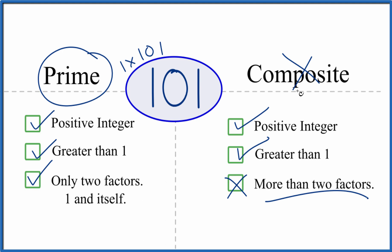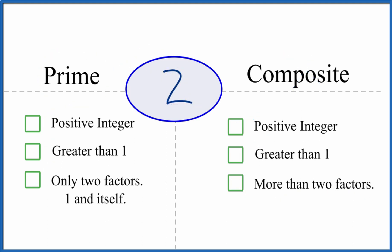Let's talk about the number 2. For 2, you might think that it's an even number, so it should be composite. But let's look at our definition. It is a positive integer. It is greater than 1, but there are only two factors, 1 and 2. 1 times 2, that equals 2. There aren't any more factors.